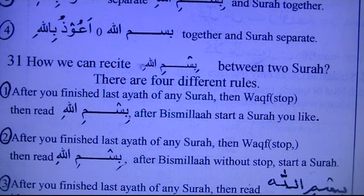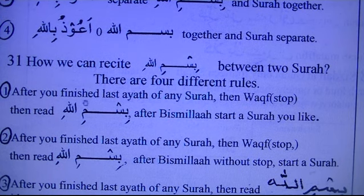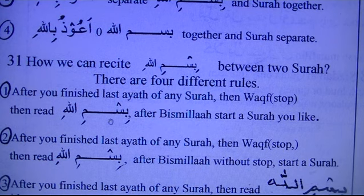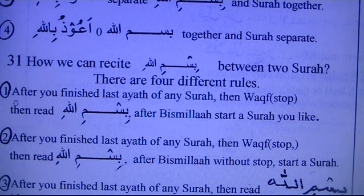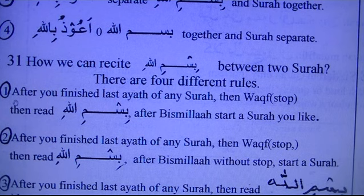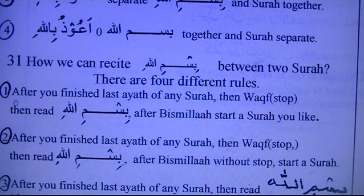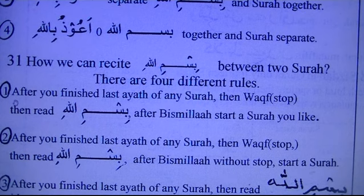Rule number 31: how to recite Bismillah between two surahs — there are four different rules. Option one: finish one surah, stop, then say Bismillah, stop again, then start the next surah. For example: finish Surah Al-Fatiha — stop — Bismillahir rahmanir raheem — stop — Qul huwa Allahu ahad. Every place is stopped.